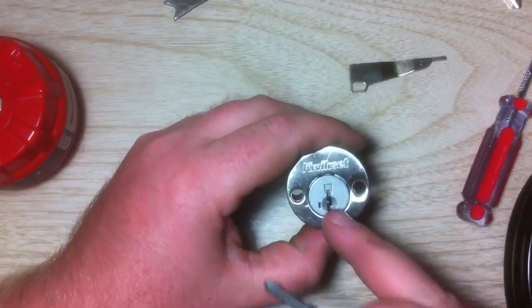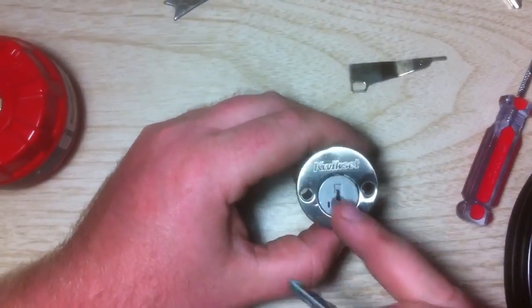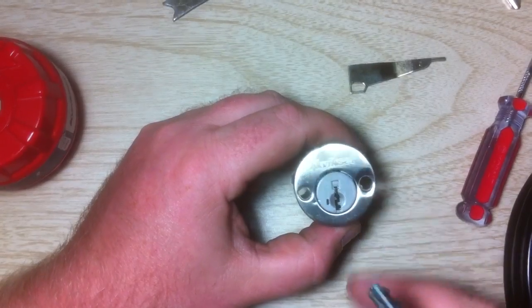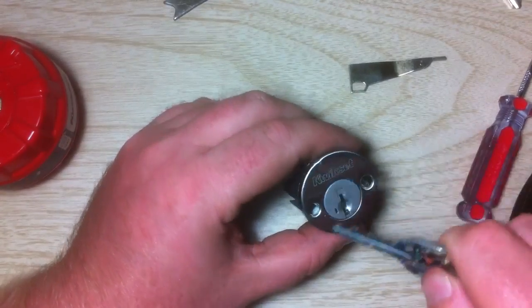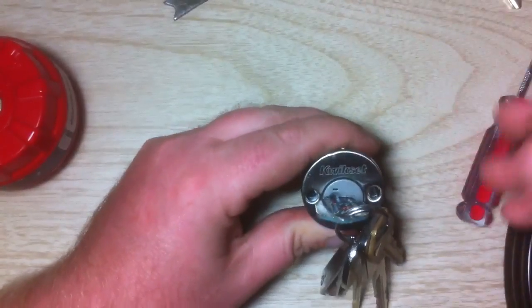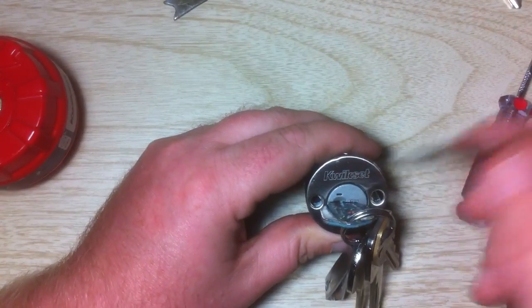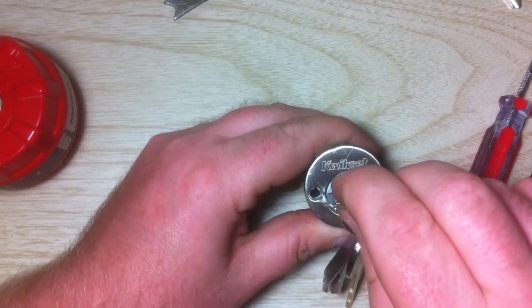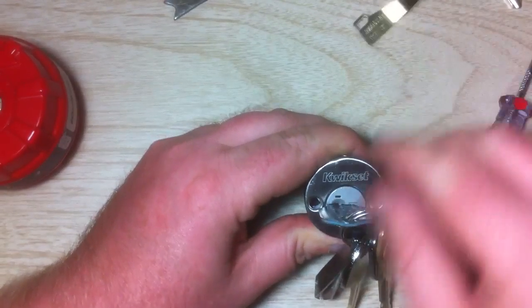Again, now I'll show you one more time. And remember, this is on your door. You don't have to remove this if you already have an operating key. So you put your key in, turn it to three o'clock, use your smart key reset tool until you hear it click. Remove the key.